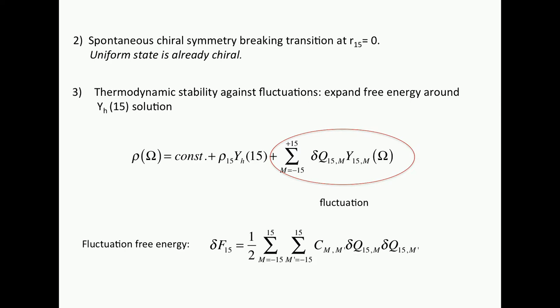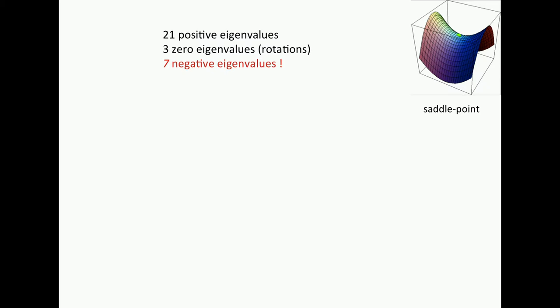Well, because this is an extremum, you don't get linear terms, but you get quadratic terms like a harmonic oscillator. And this is how it looks, no surprise. Sum over all M, M prime. And here's this delta Q. It's like a displacement away from equilibrium. And these are the coefficients. So it's like a matrix, 31 by 31.